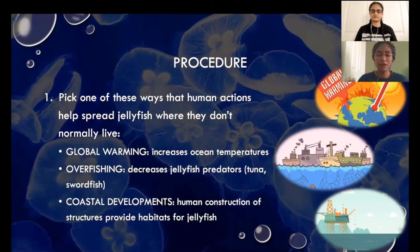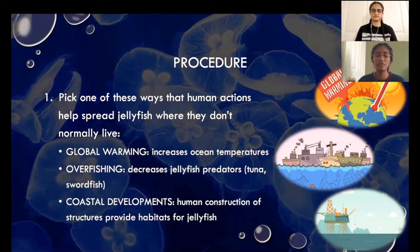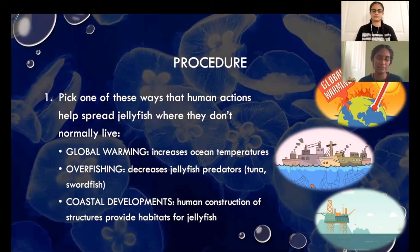You're going to pick one way that human actions help spread jellyfish where they don't normally live. The first action is that as oceans get warmer, it becomes more suitable for marine animals to spread into areas that had previously been too cold. The second action is that with no predators around to keep the jellyfish population in control, their population increases due to overfishing. The last action is that structures we build in water — like piers, oil platforms, and artificial reefs — give jellyfish extra habitat where they can live. You can pause the video to revisit the ideas and pick any one of these actions.